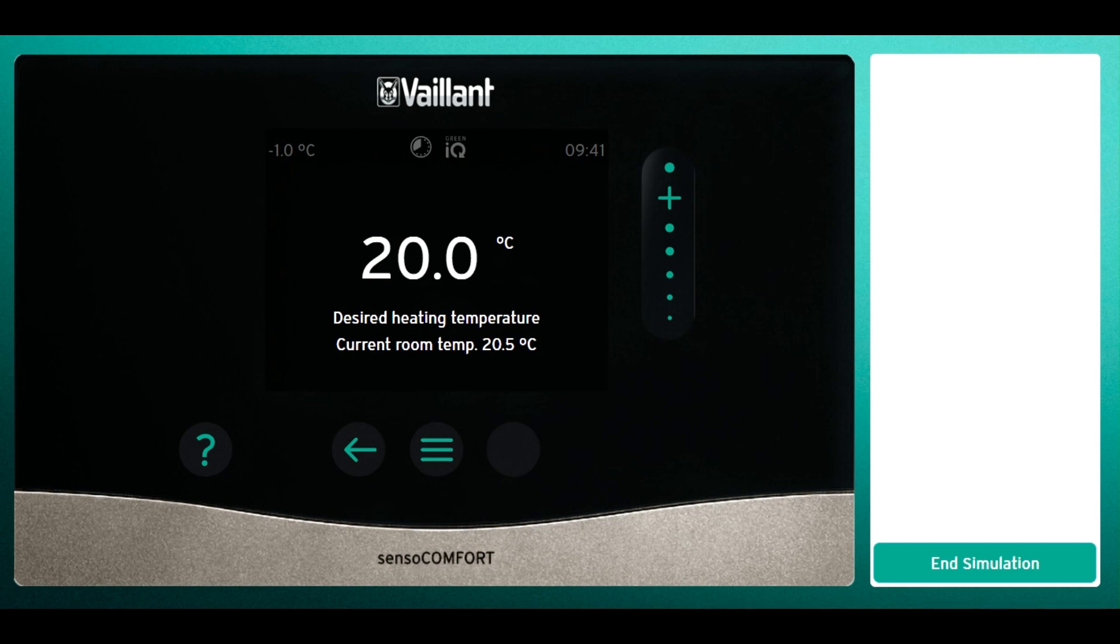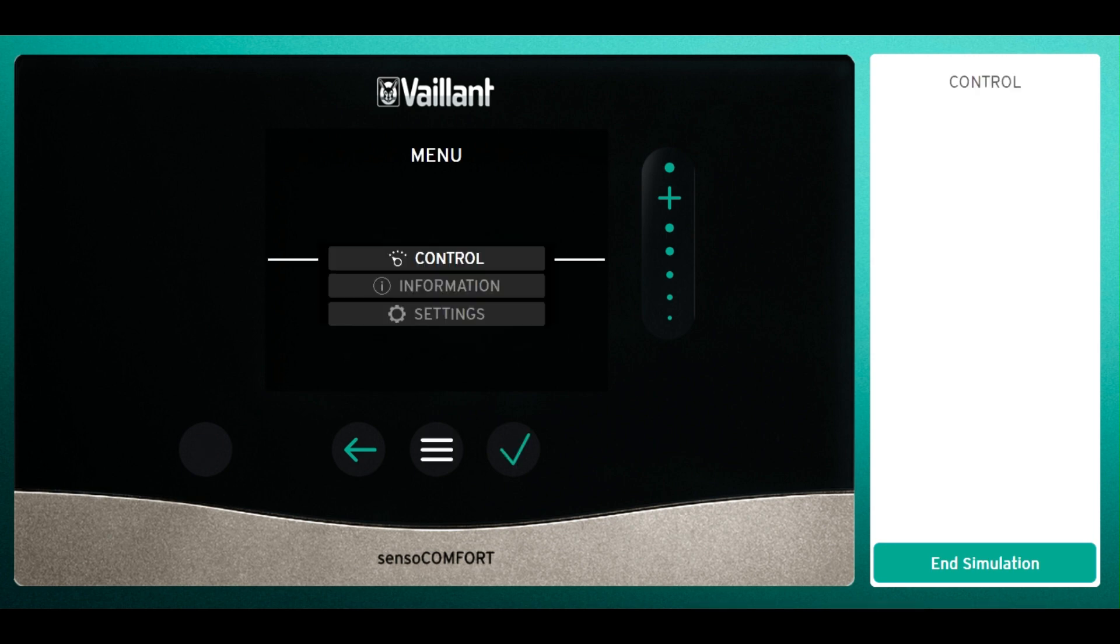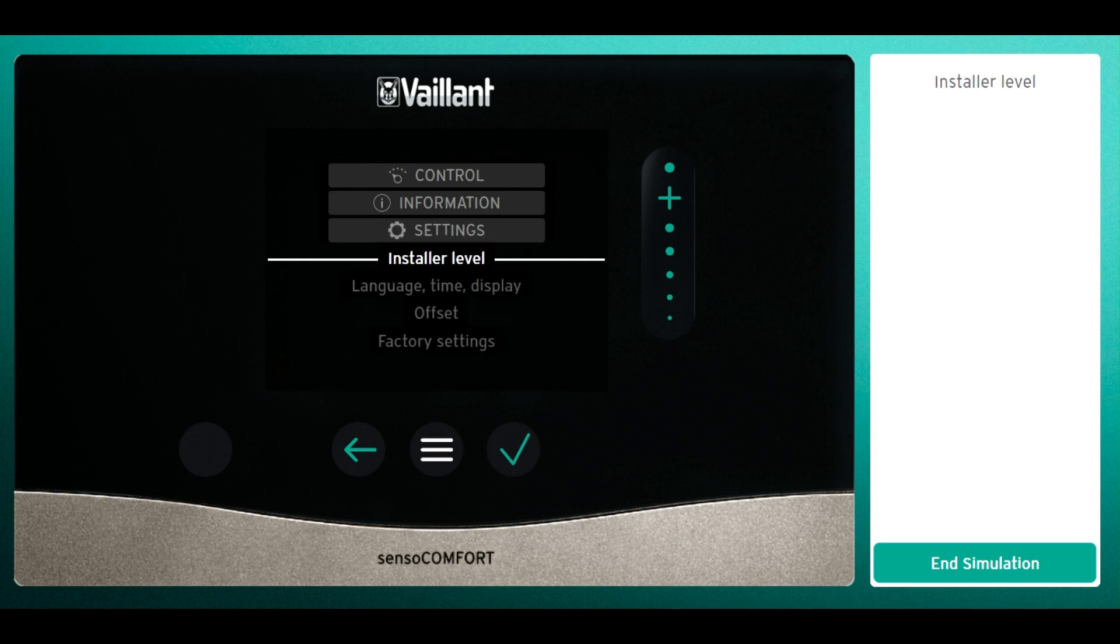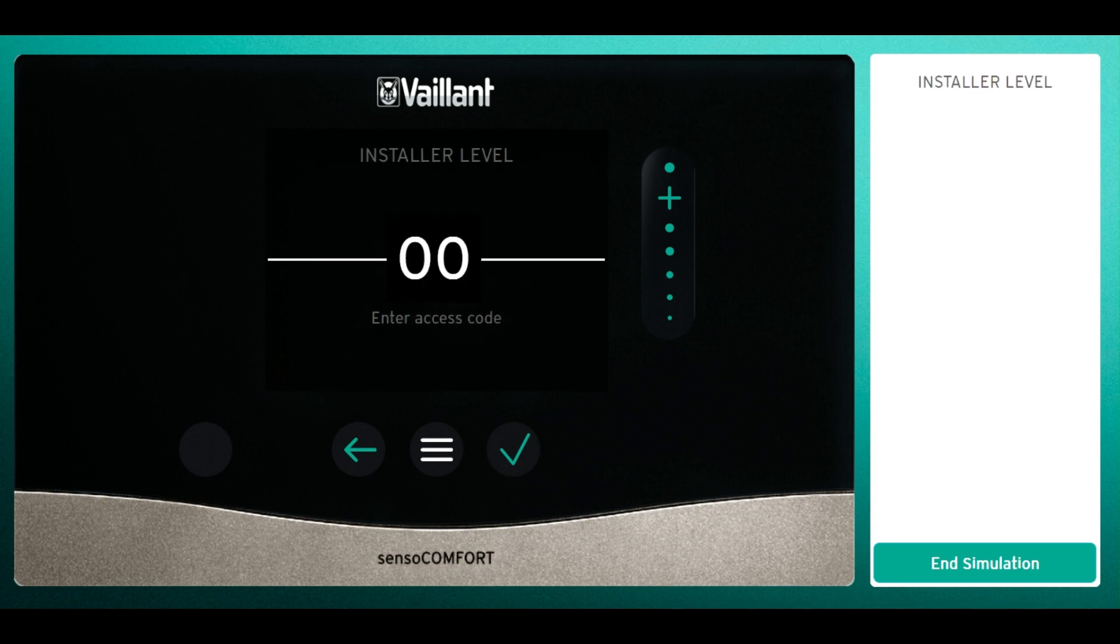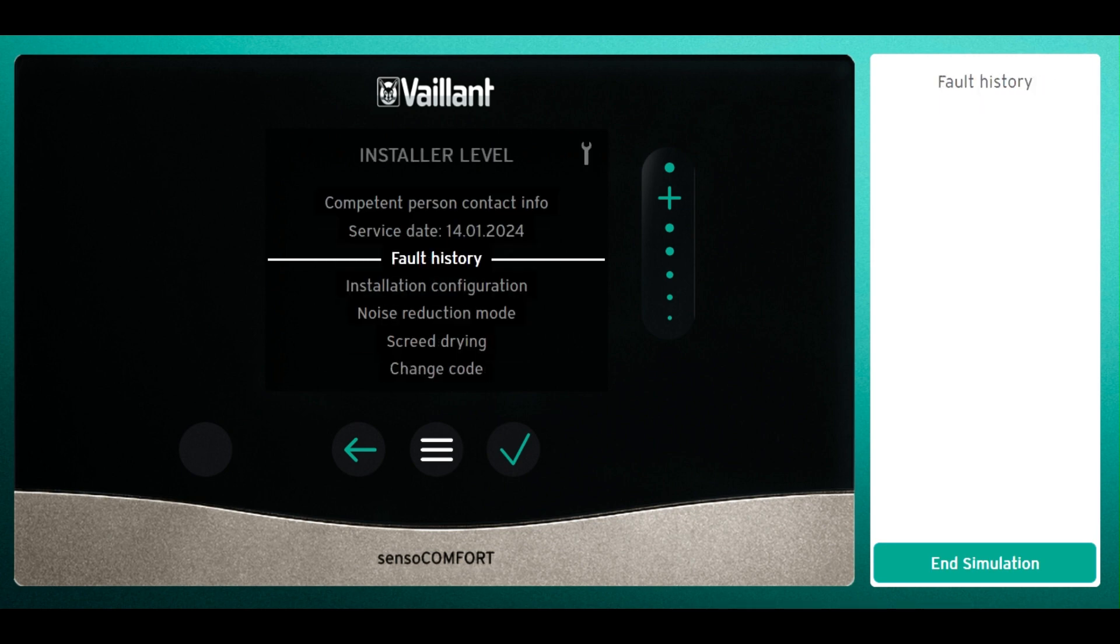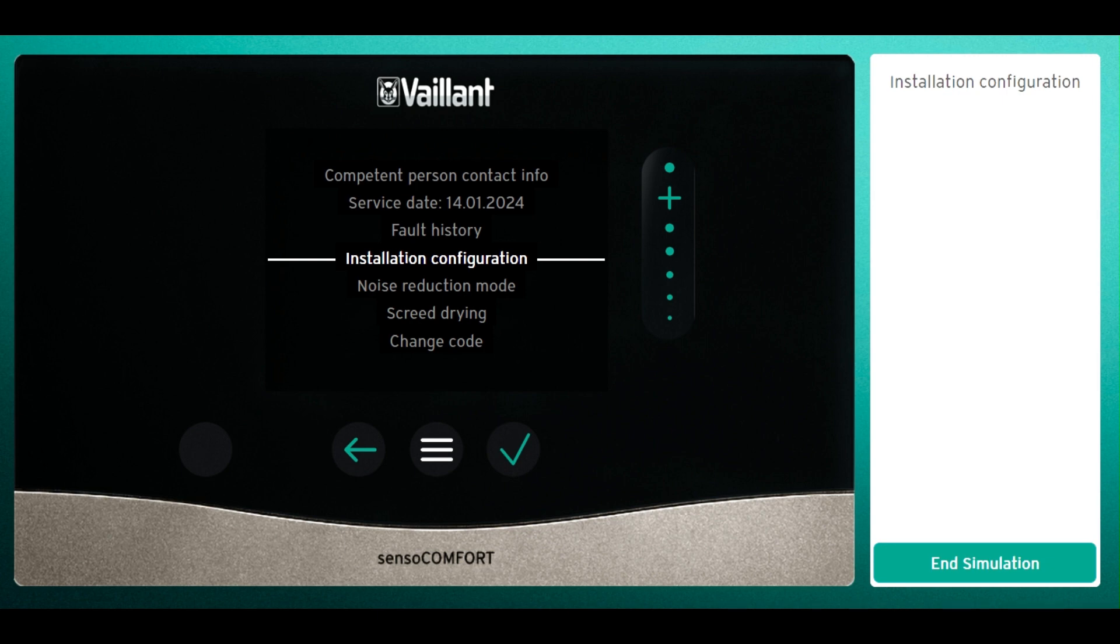Let's have a look at the heat curve and what it means. To start, we need to press the three horizontal lines at the bottom to bring up the menu, down to settings and press tick. Go to installer level and press tick again. The code is zero zero, so just press tick. Down to installation configuration and press tick.